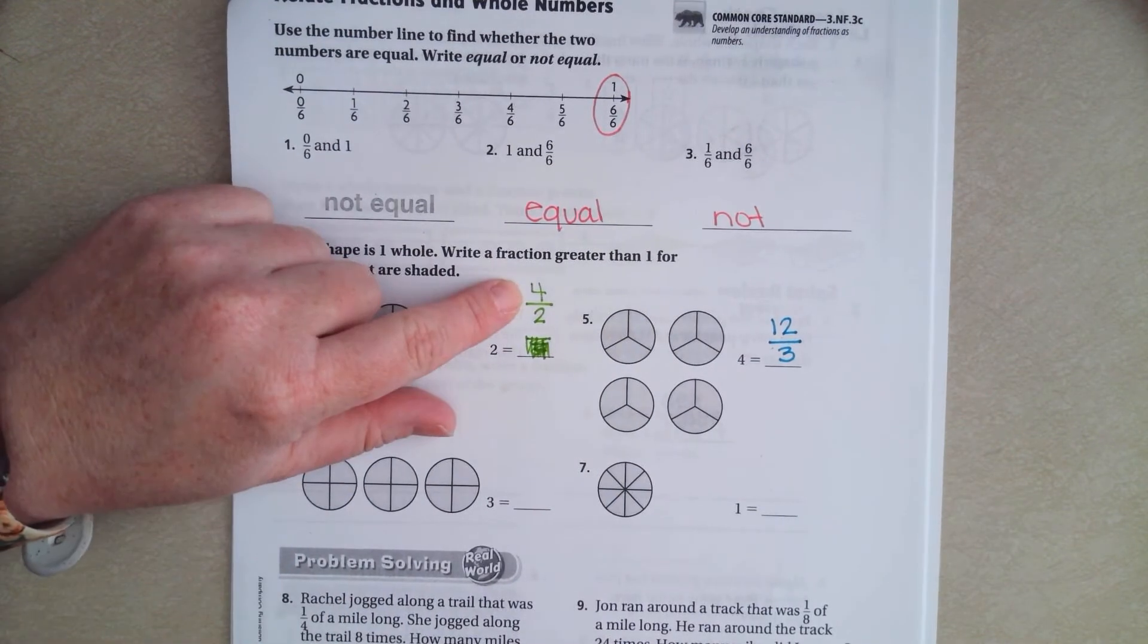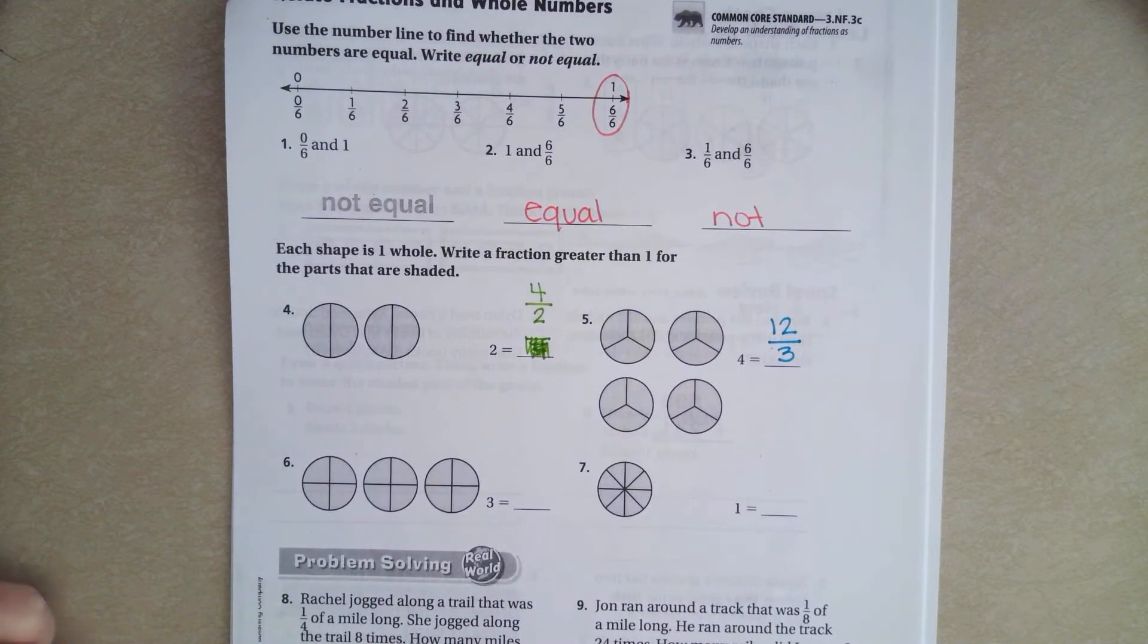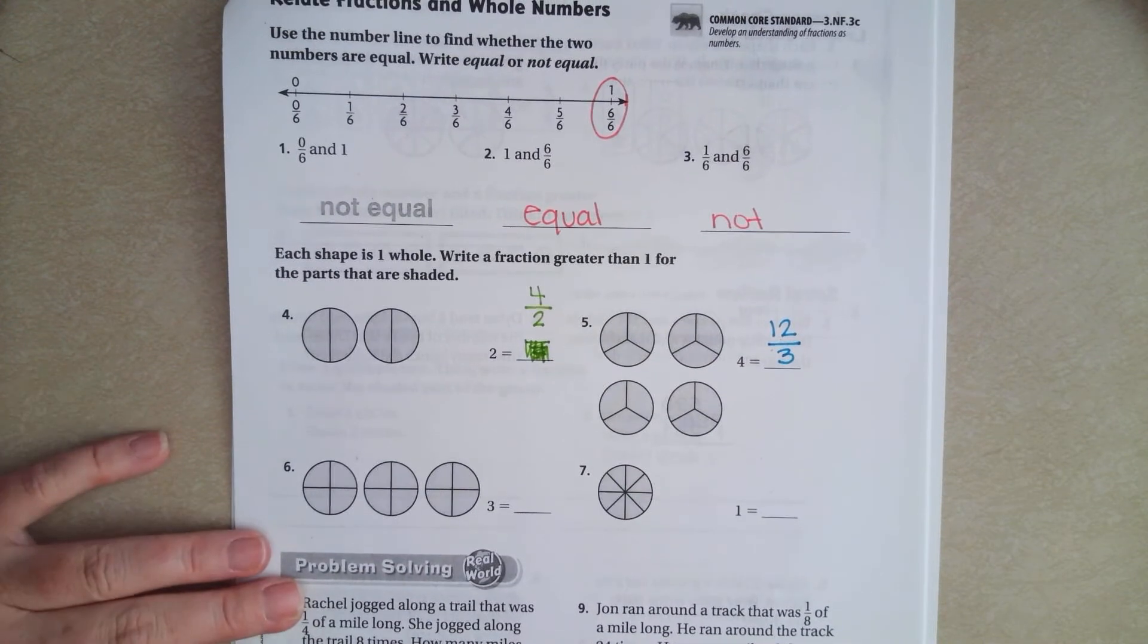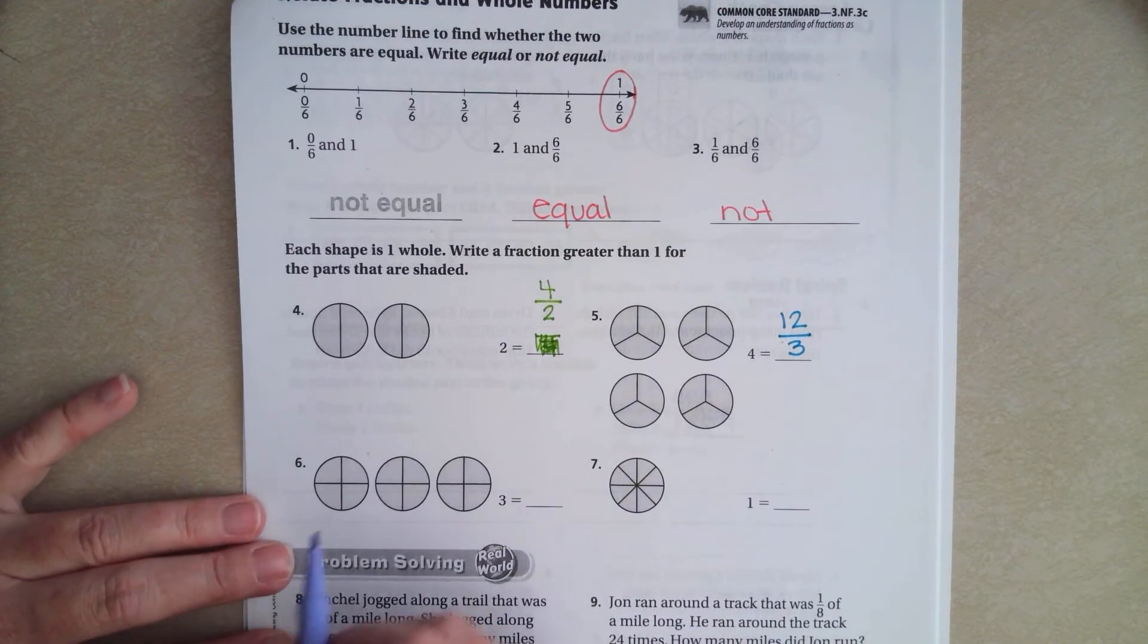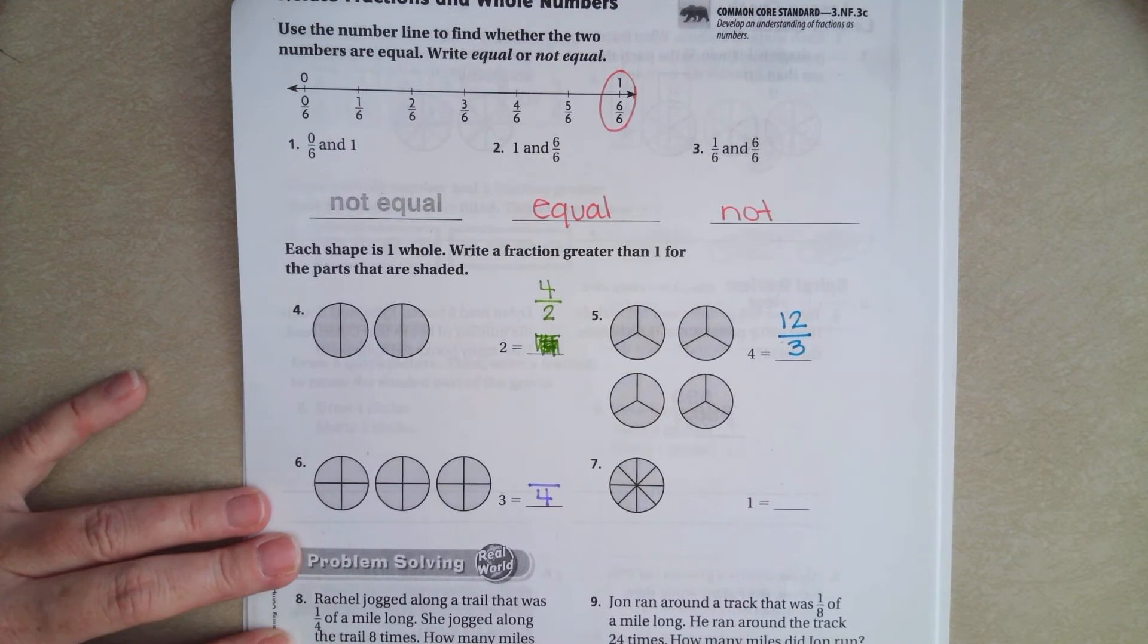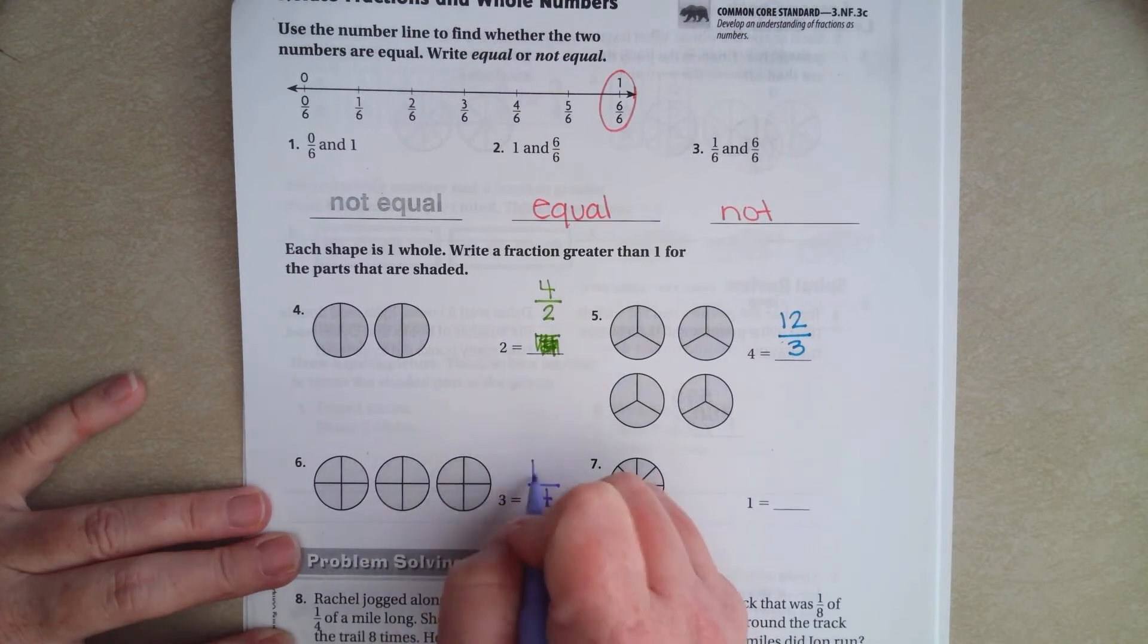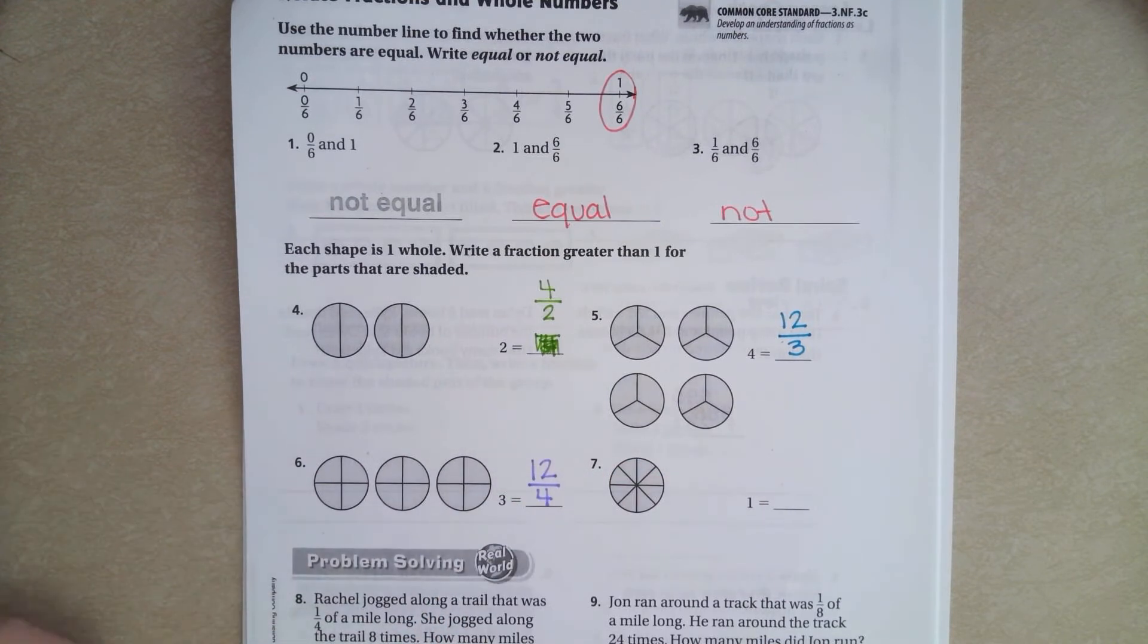When the top number is bigger than the bottom number, we call that an improper fraction. It's just that the top is bigger than the bottom, so it's improper. We're going to try this next one. We have, they're cut up into 4's. So our denominator is going to be 4's. How many 4's do I have? I have 4, 8, 12.